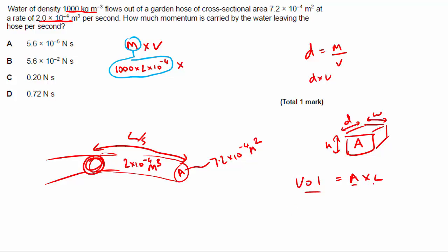So rearrange for length. Volume divided by area. Volume divided by area. So if I put that back here, it's going to be a volume of 2 times 10 to the minus 4 divided by the area, which is 7.2 times 10 to the minus 4. Okay?